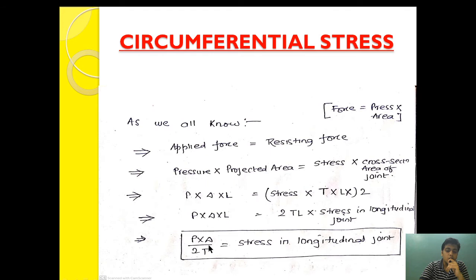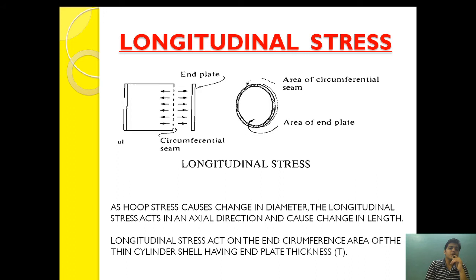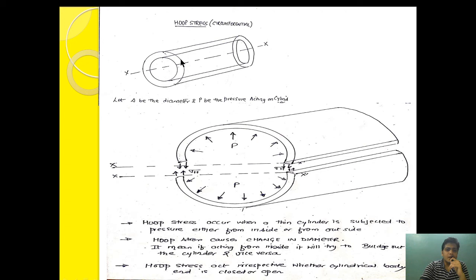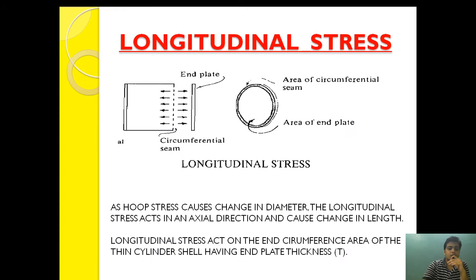Now let's see about longitudinal stress. Longitudinal stress is the stress which acts in an axial direction and causes a change in length. If a cylindrical body is subjected to pressure P from inside and the end of the cylindrical body is closed, then the pressure acting on this circumferential joint will cause a change in the axial length of the system. So while hoop stress causes change in diameter, longitudinal stress acts in the axial direction and causes change in length — it will cause the cylindrical body to pull in two opposite axial directions.